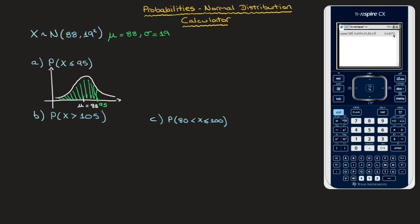Rounding to three significant figures, this area is equal to 0.644. In an exam, I would recommend writing that the probability that X be less than or equal to 95 is equal to normCDF with lower bound negative infinity, upper bound 95, mean 88, and standard deviation 19. That's equal to 0.644, rounded to three significant figures.